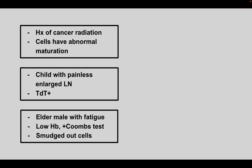Next is a patient who has cancer and radiation treatment. Cells have abnormal maturation. This is myelodysplastic syndrome — it occurs in patients that receive radiation for cancer treatment.